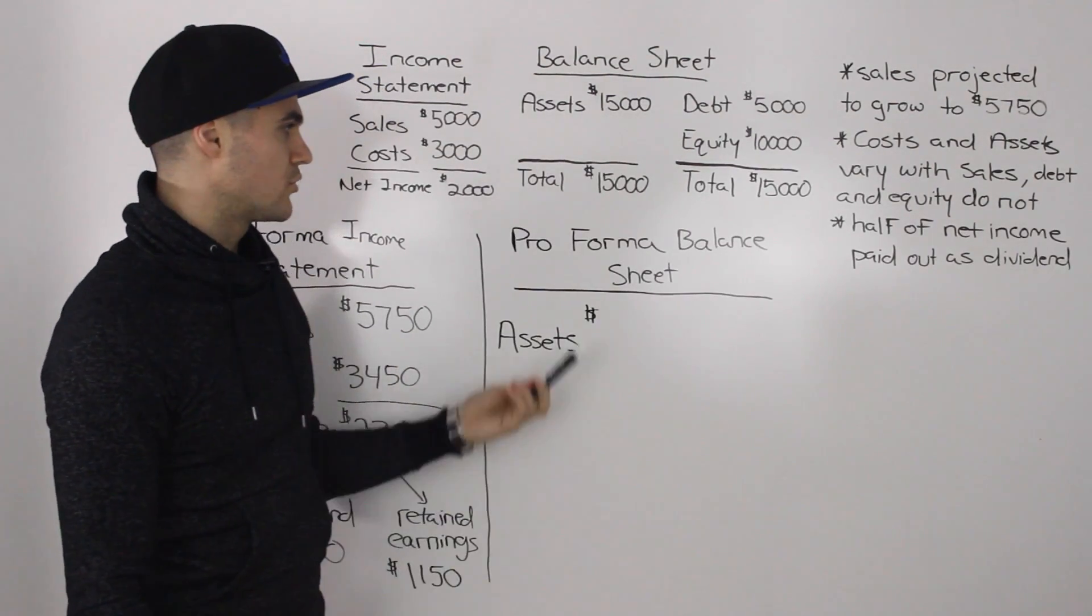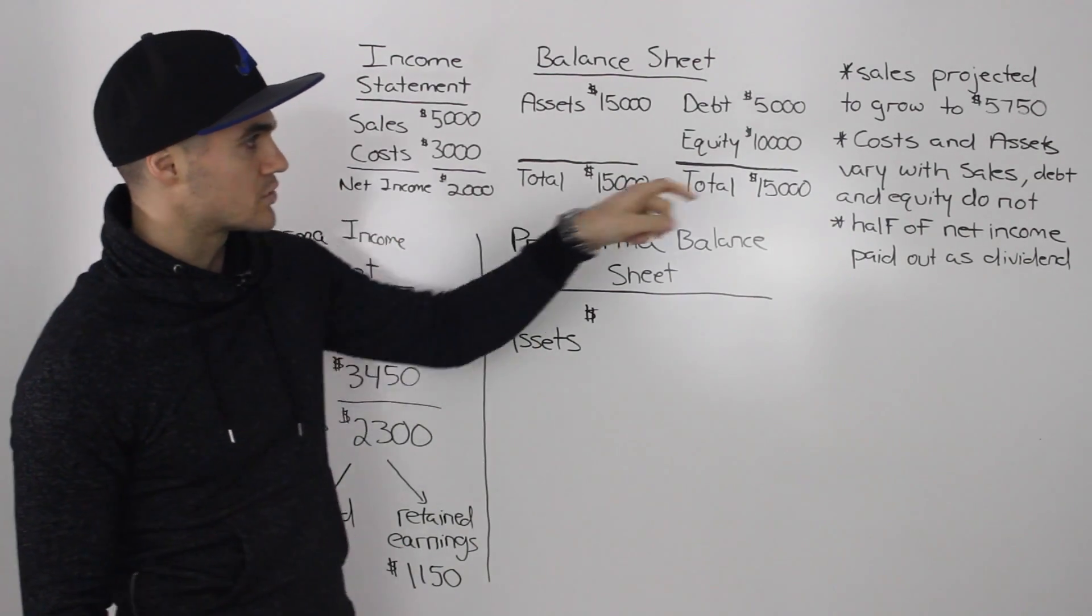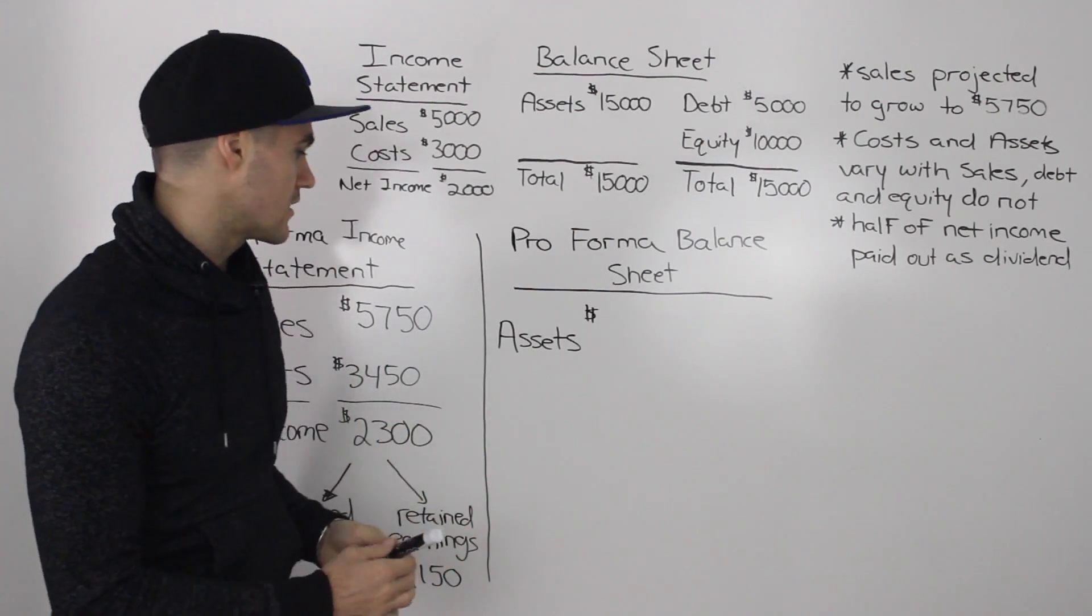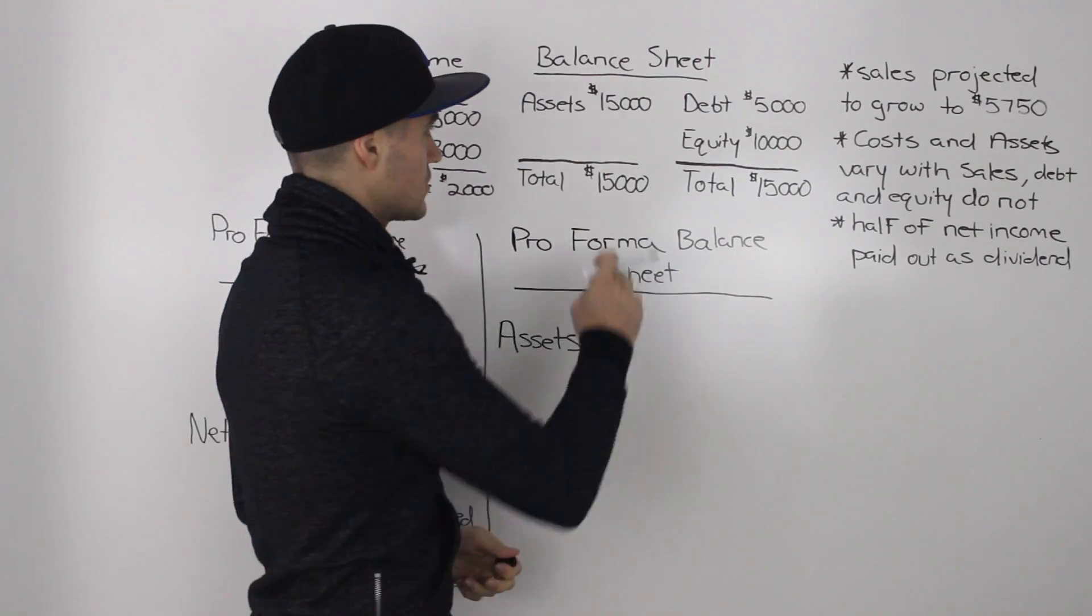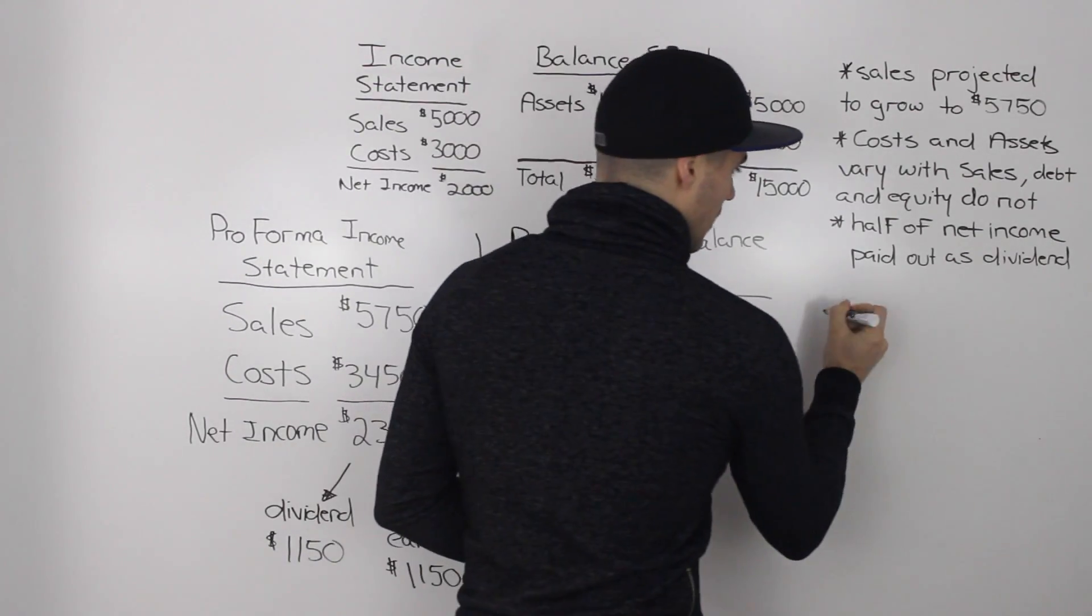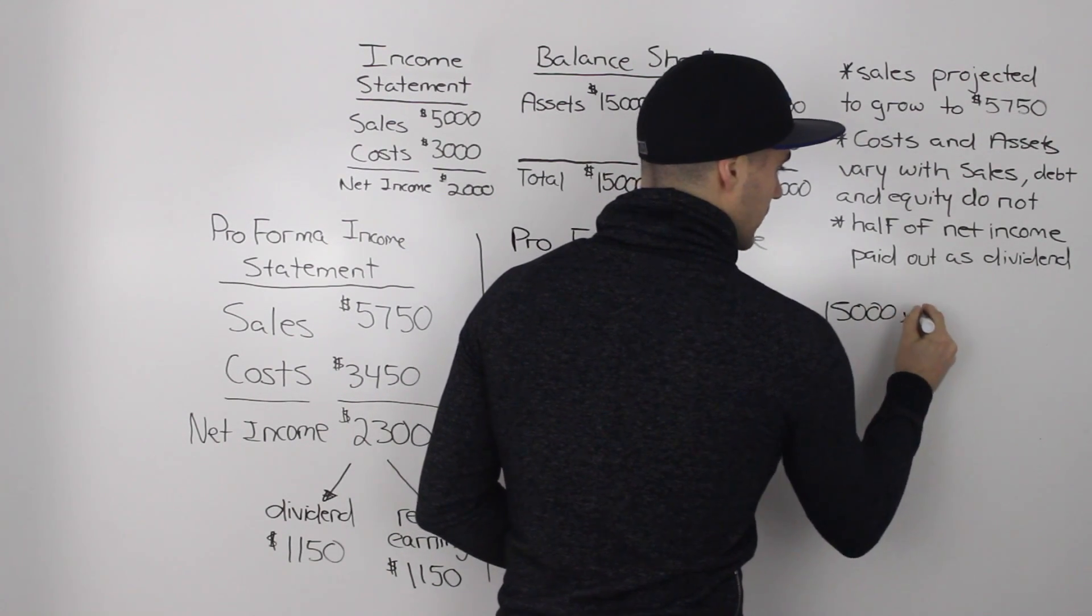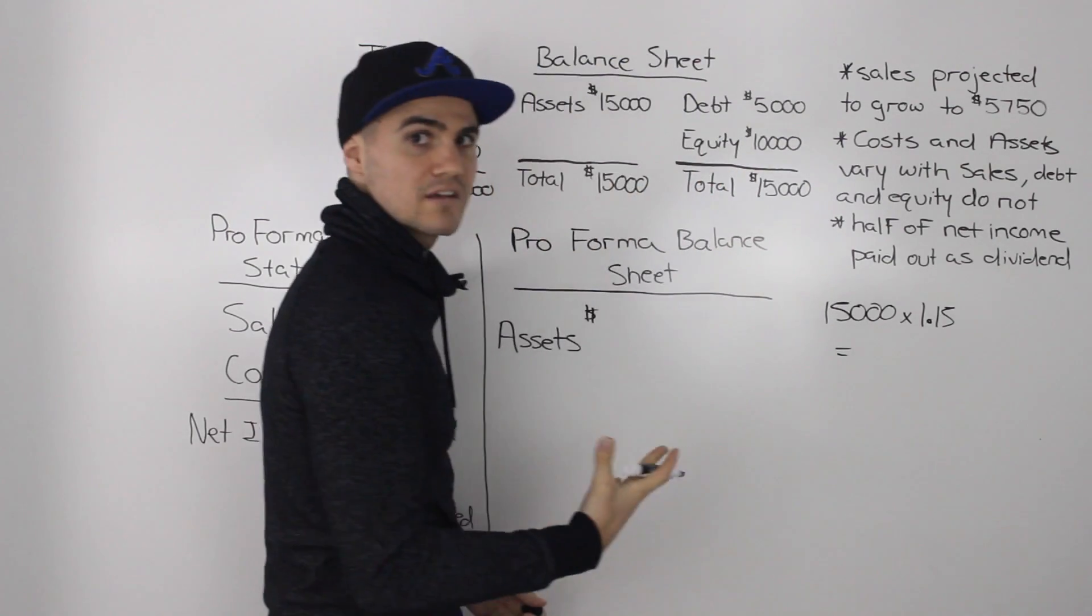Now let's get into making the pro forma balance sheet. So let's start off with the assets. Well, we're told that the assets vary with the sales or they're proportionate to the sales. And as we figured out before, the sales have grown by 15%. So we would take that asset figure of $15,000 and multiply it by 1.15 to get our new asset figure.